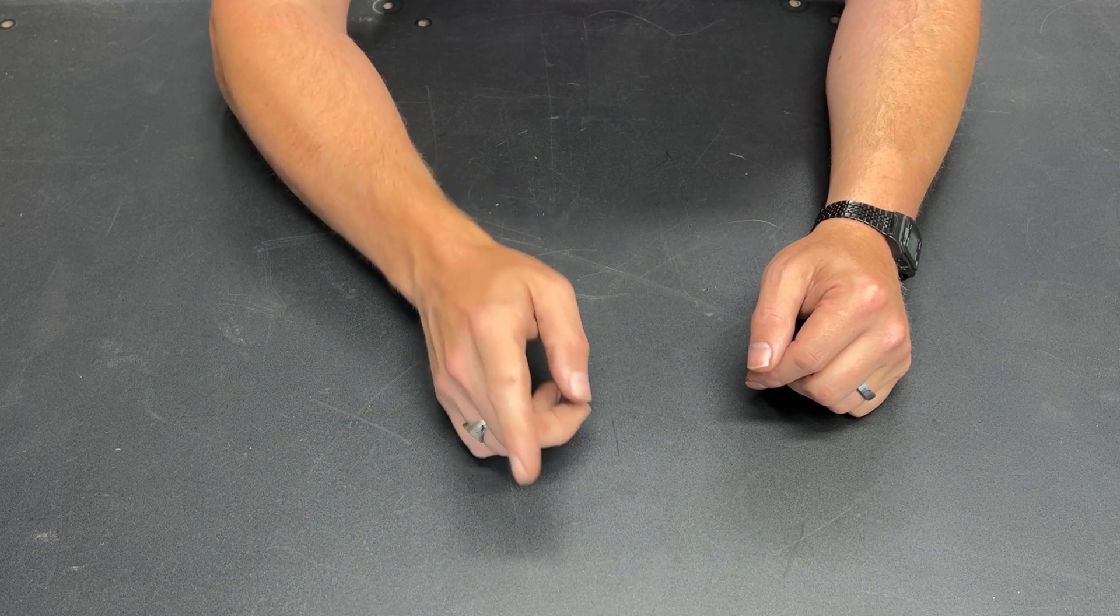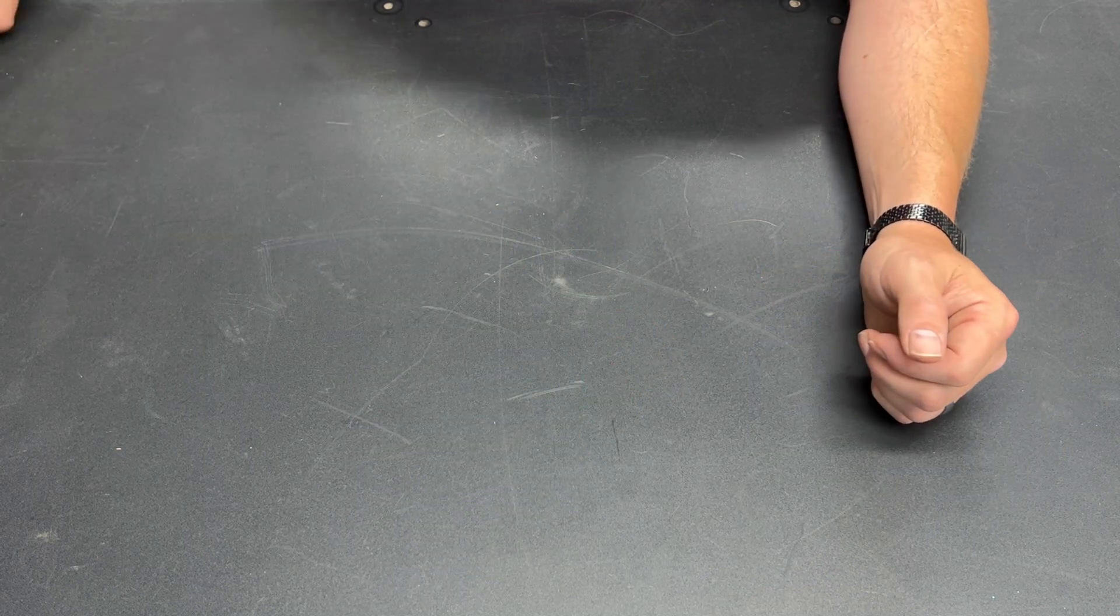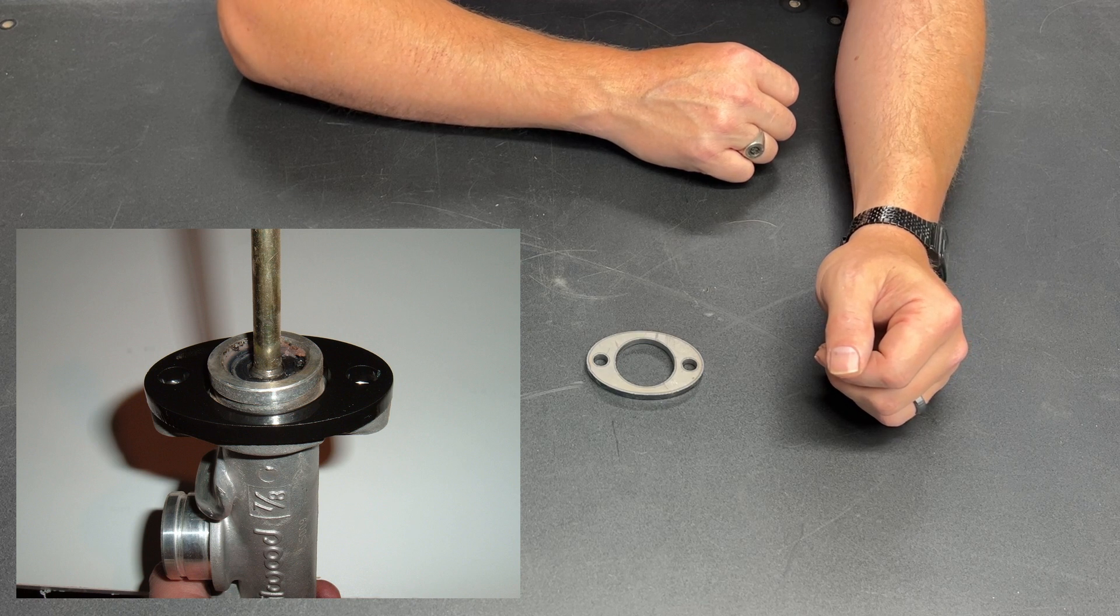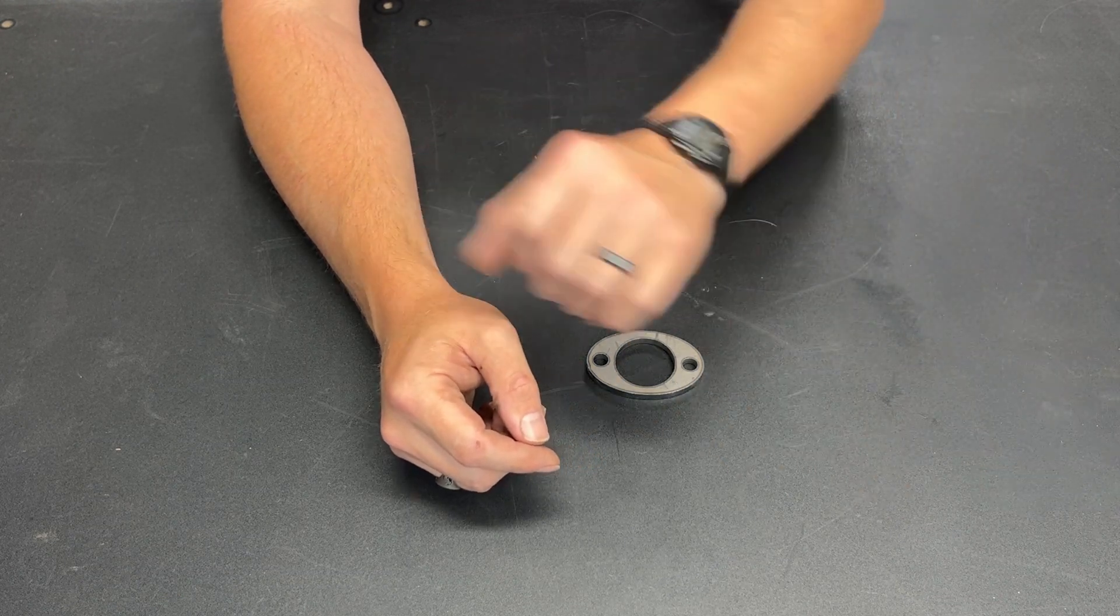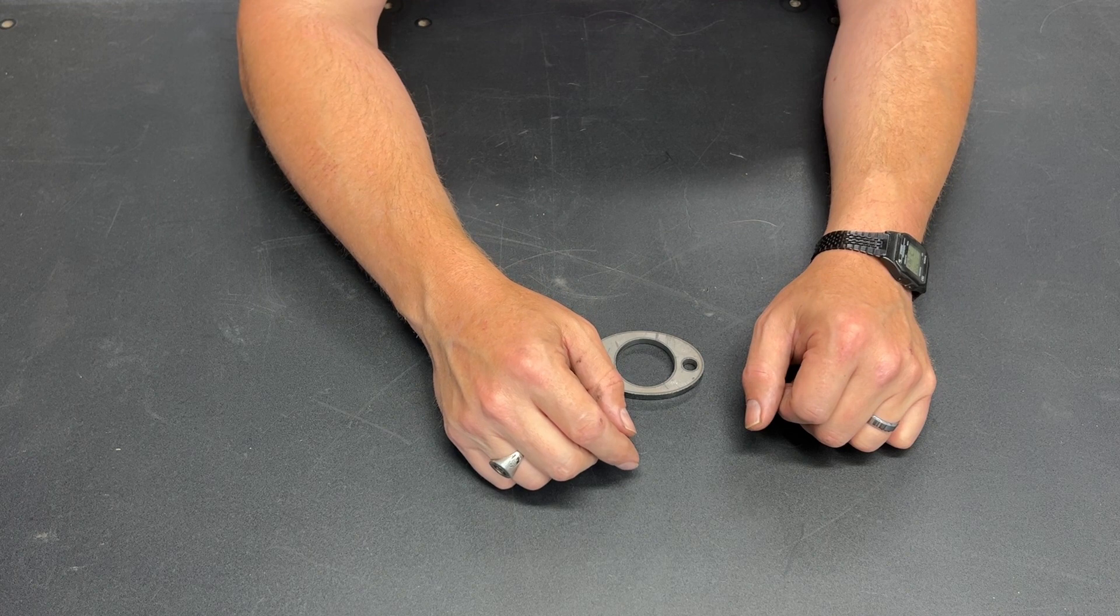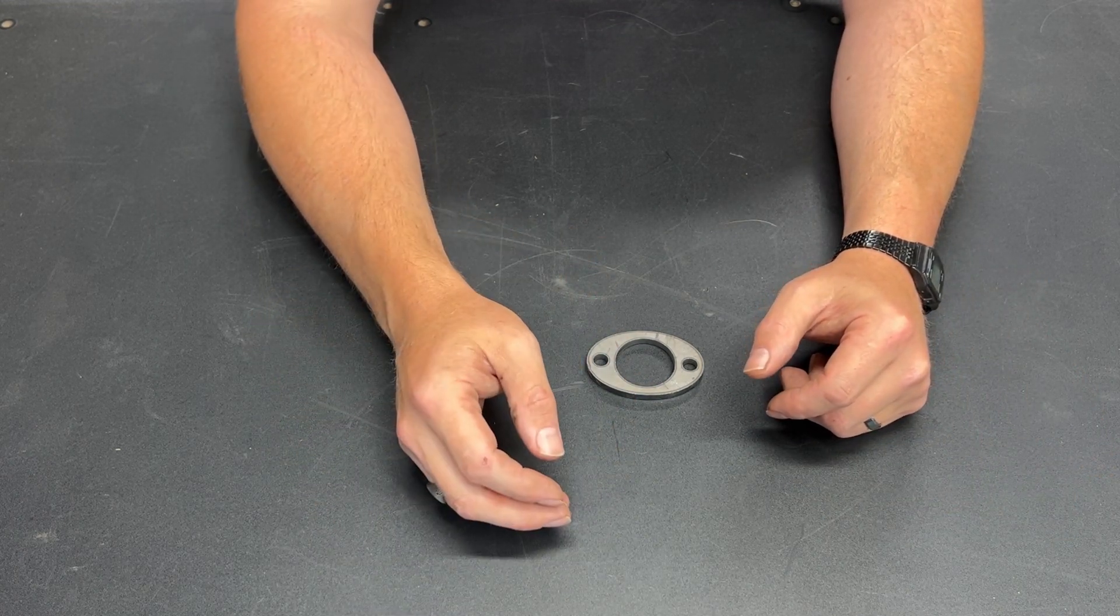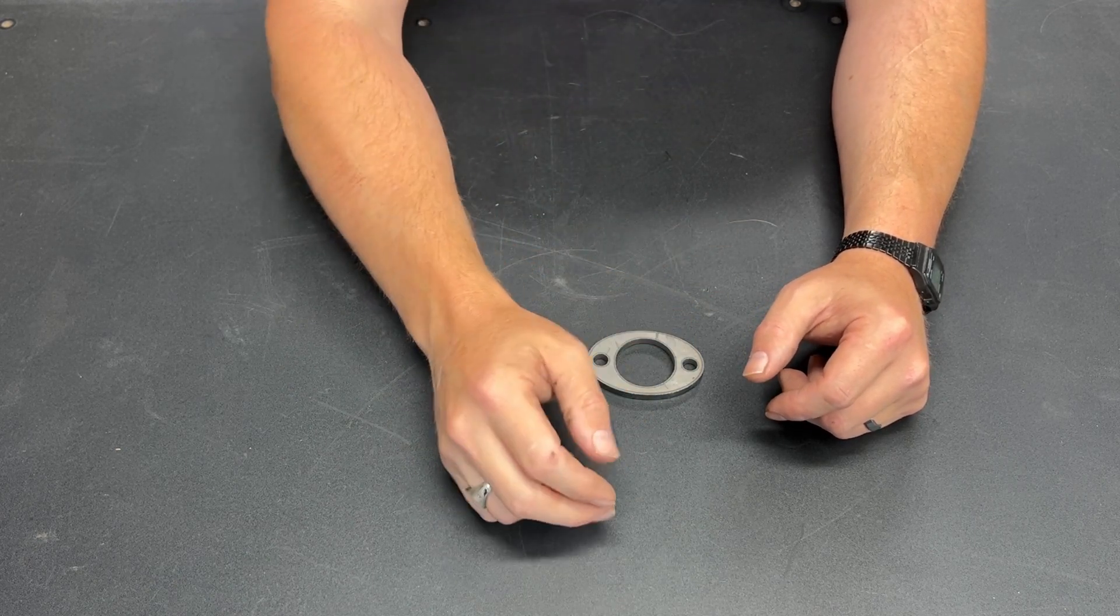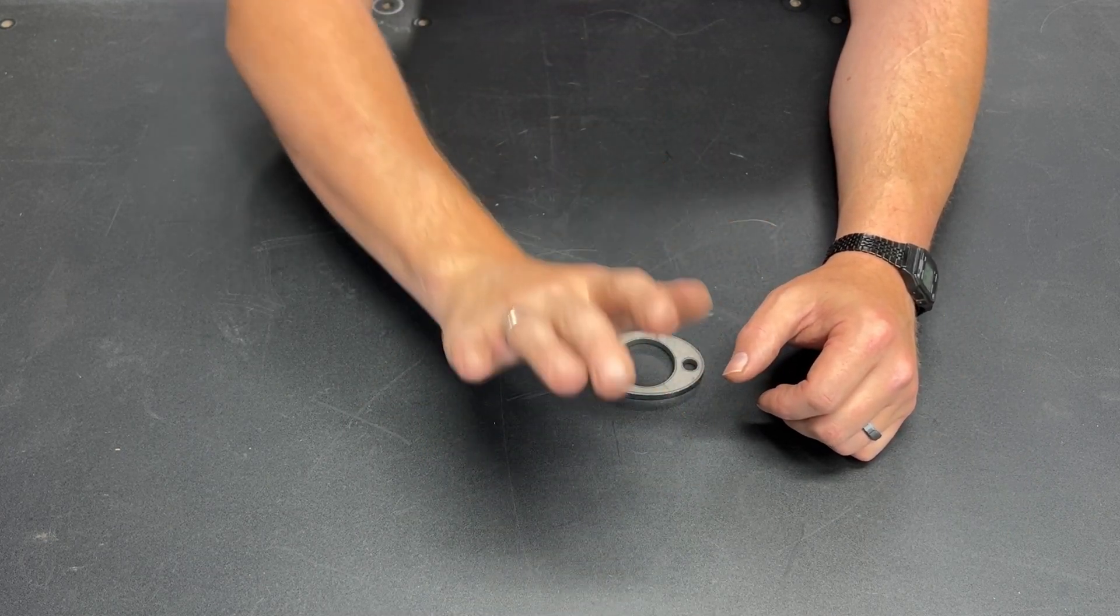The other thing that's super important when mounting a master cylinder to your firewall is to use a firewall reinforcement. I've seen people drill holes in their firewall. They slide the master cylinder in. They bolt it down and use a couple of little washers. The problem is the sheet metal on a firewall is super thin. And as you're applying that clutch, especially if you're hitting it hard, you're power shifting, those kind of things, that firewall is going to flex.